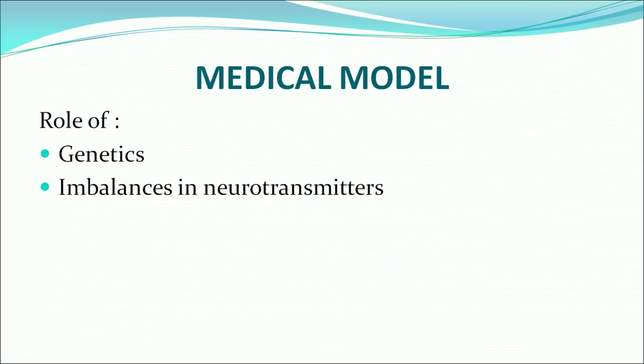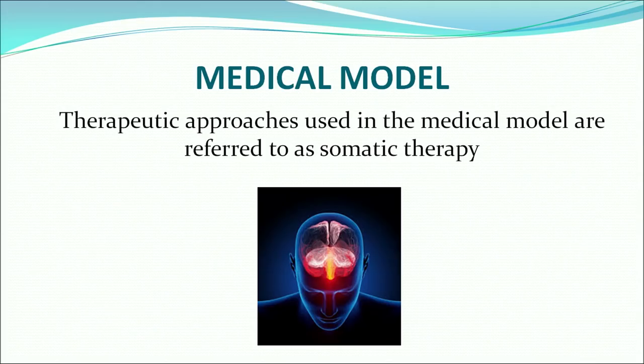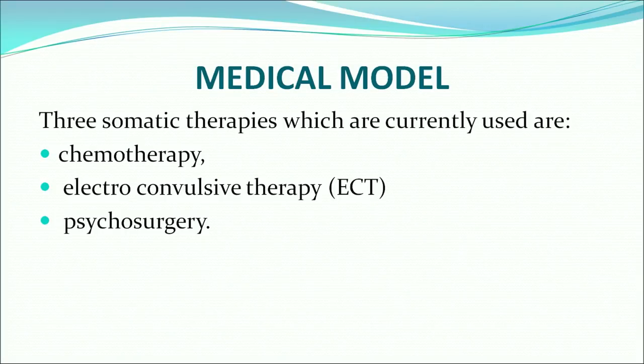The medical model considers the role of genetics and imbalances in neurotransmitters as responsible for abnormality in an individual's normal functioning. The therapeutic approaches used in the medical model are referred to as somatic therapy. There are three kinds of somatic therapies currently in use: chemotherapy, electroconvulsive therapy, and psychosurgery.